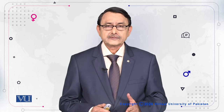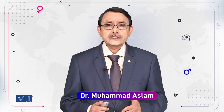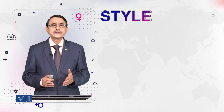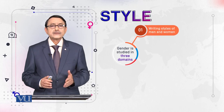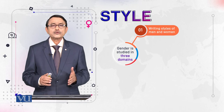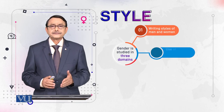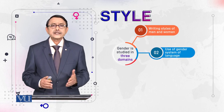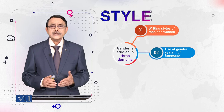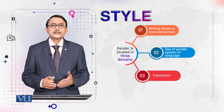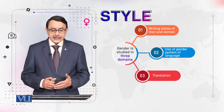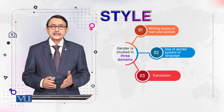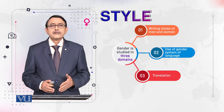In English literature, in this module, we will see how we can study gender through English literature. We can study it in three areas or domains: first, how male and female authors choose language and their style; second, the gender system of the language in which they are writing; and third, translation from one language to another — literary translation. Each of these three areas will be discussed in different modules.